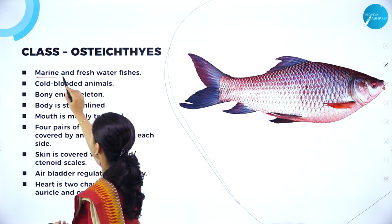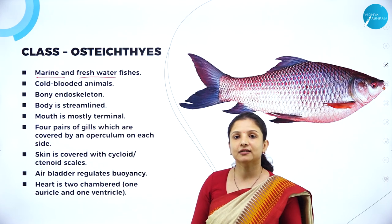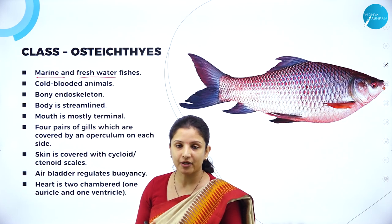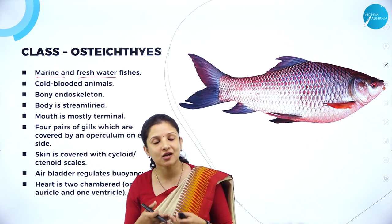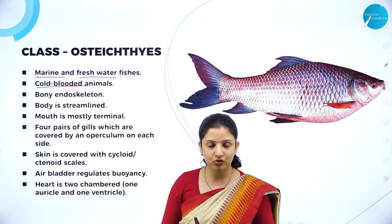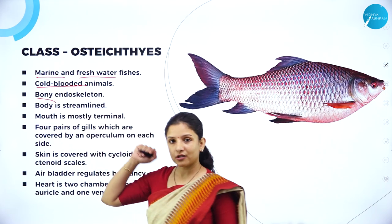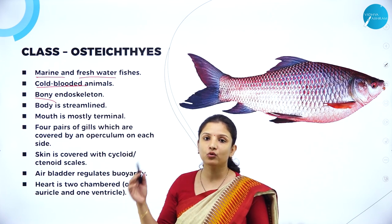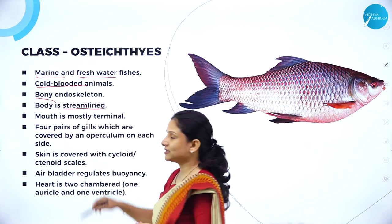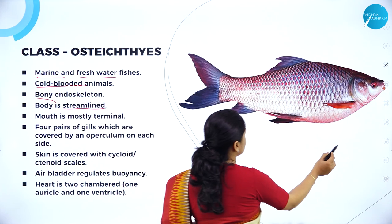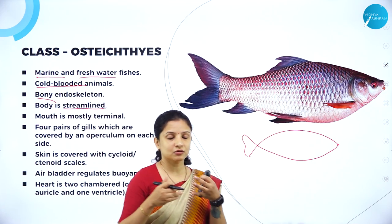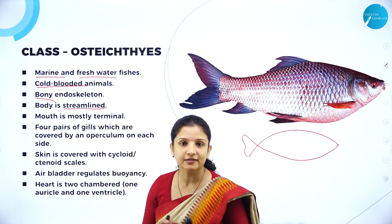Class Osteichthyes includes marine and freshwater fishes. They are cold-blooded animals — that is, they are poikilotherms — wherein these organisms are not capable of regulating their body temperature. Their body temperature tends to change according to the external temperature. They have a bony endoskeleton, whereas Chondrichthyes had a cartilaginous endoskeleton. The body is streamlined so that it can cut through water currents and swim fast.